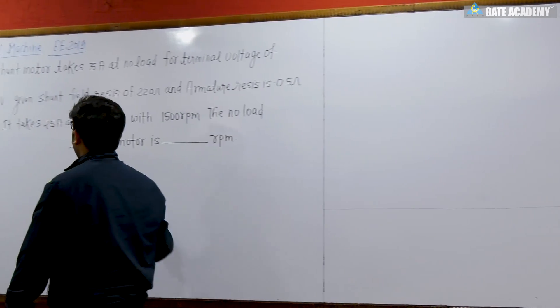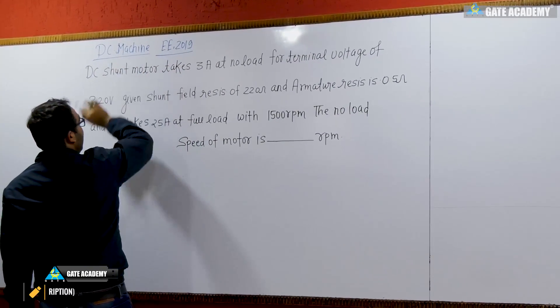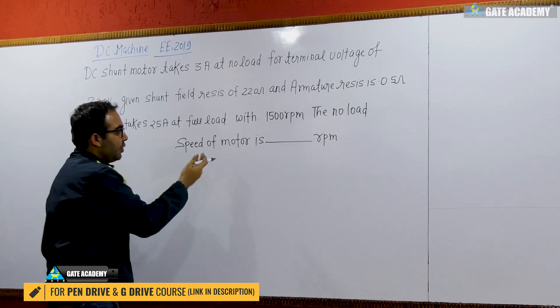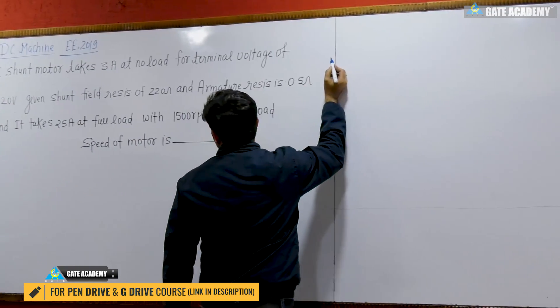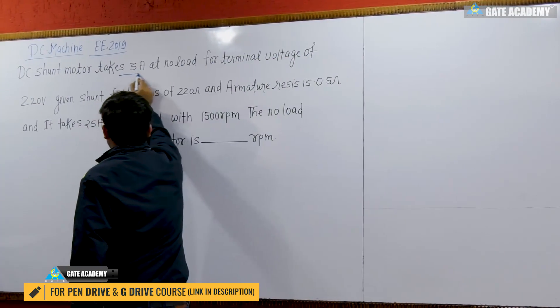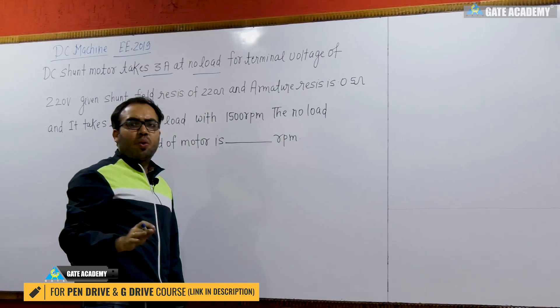This is the next question asked in year 2019 for DC machine. This is a very simple question. The DC shunt motor takes 3A at no load condition, meaning there is no load on the shaft but still 3A is drawn by the motor.